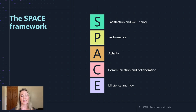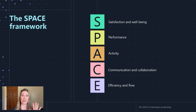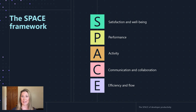So let's take a closer look at each of these dimensions. As I mentioned, there are five dimensions: satisfaction and wellbeing, performance, activity, communication and collaboration, and efficiency and flow. We'll cover each of them in detail.